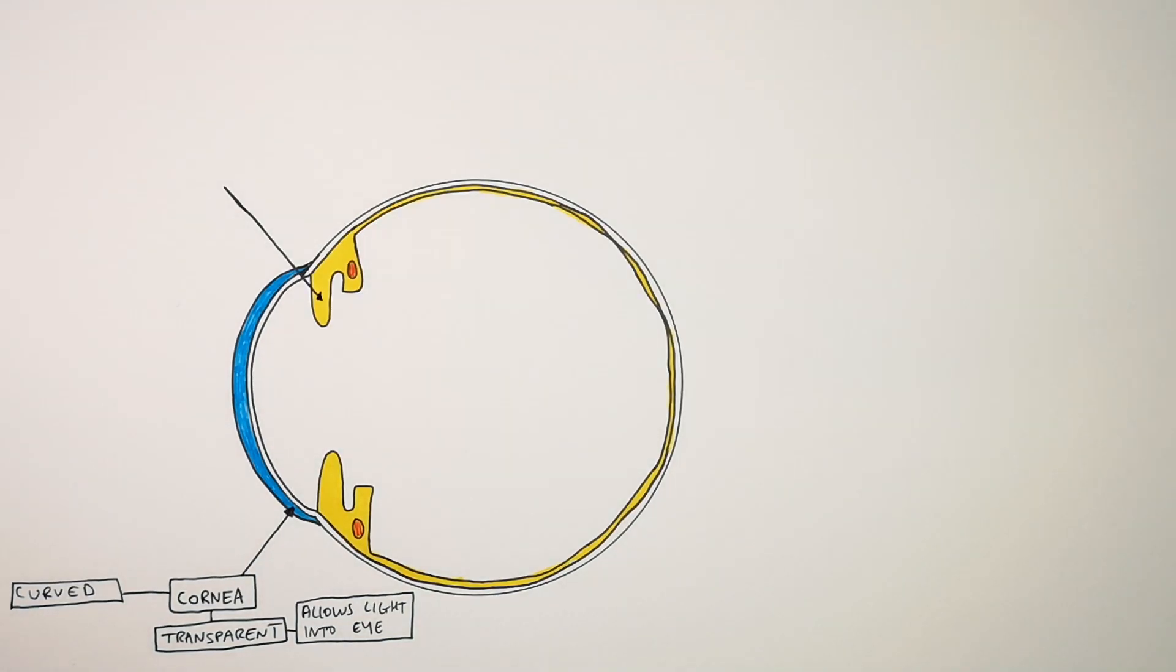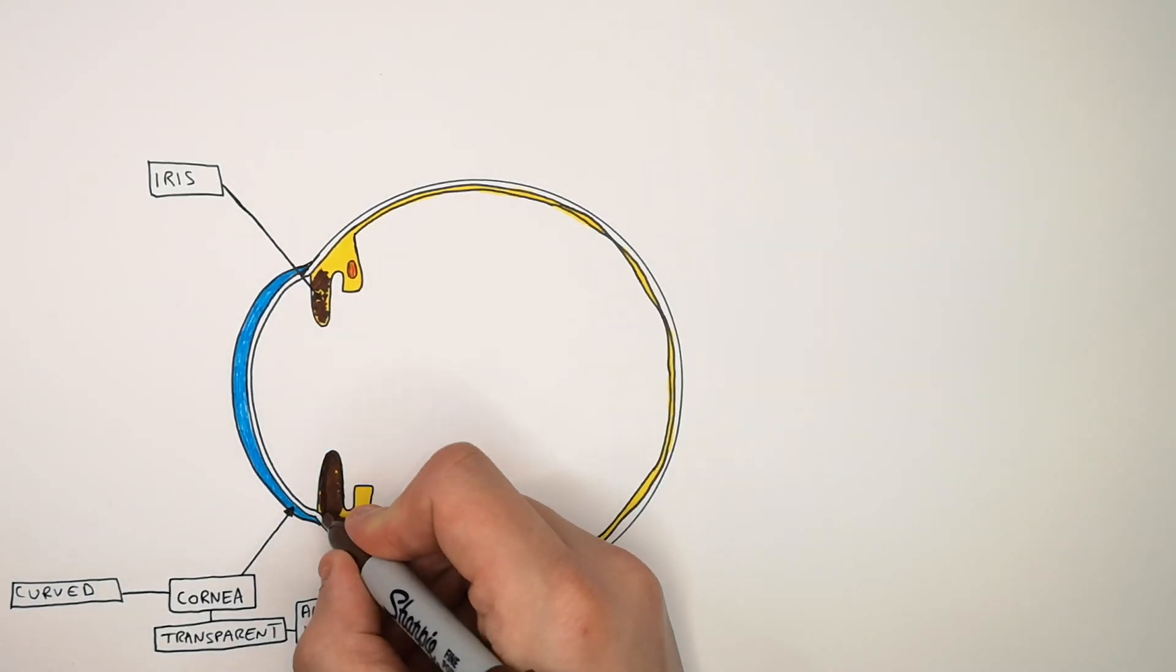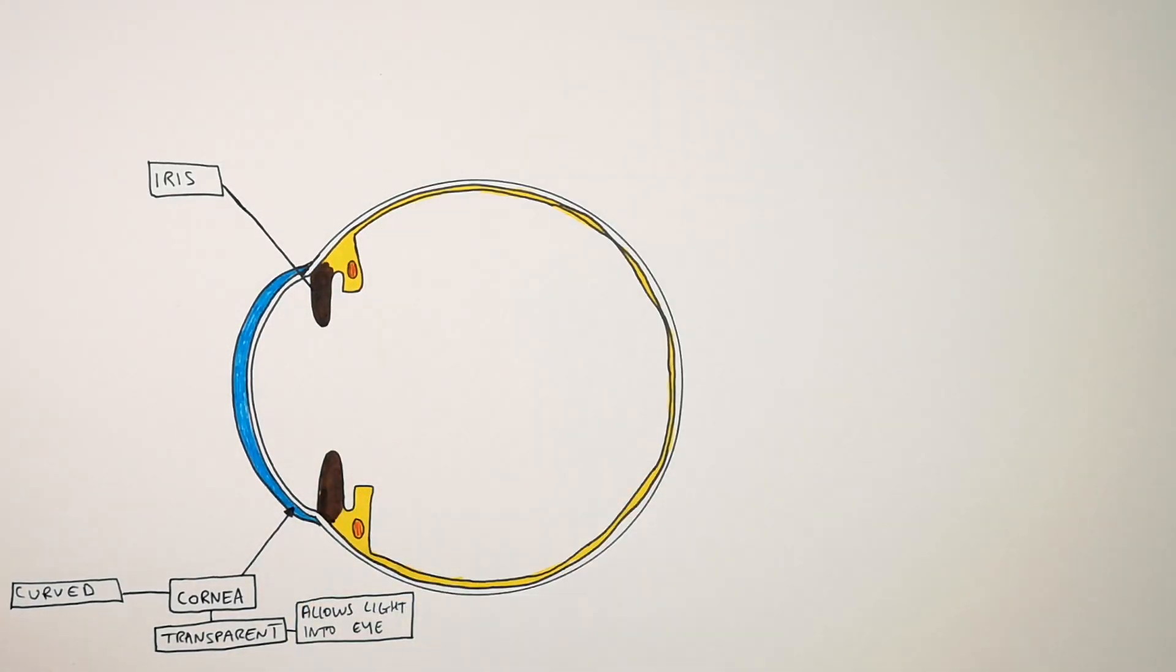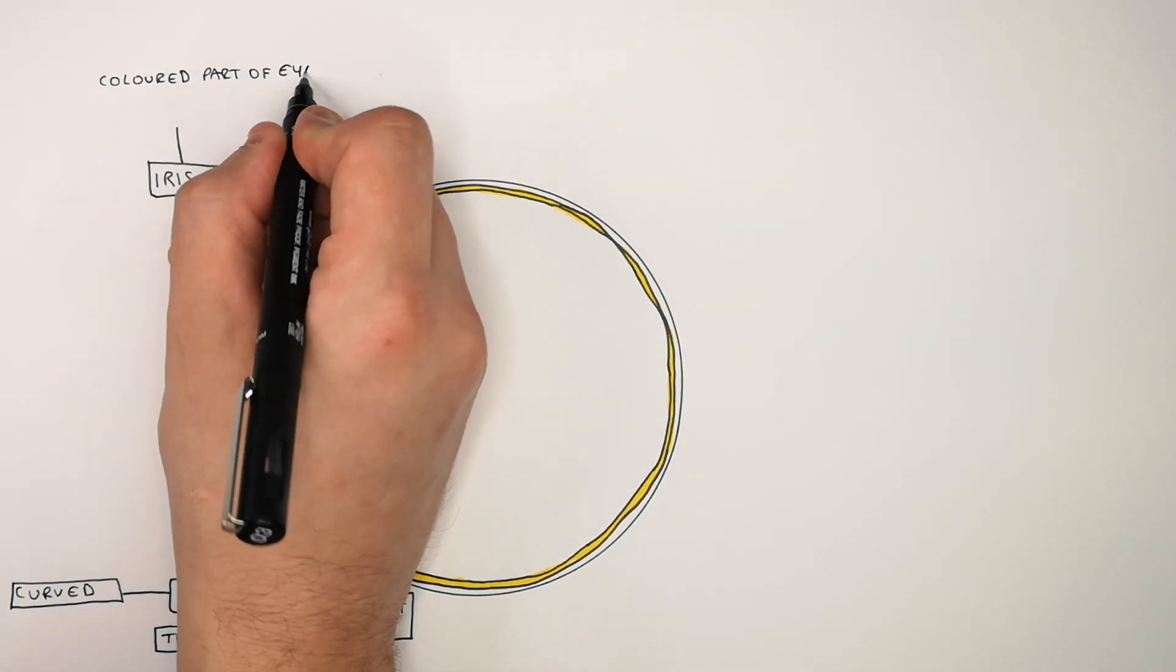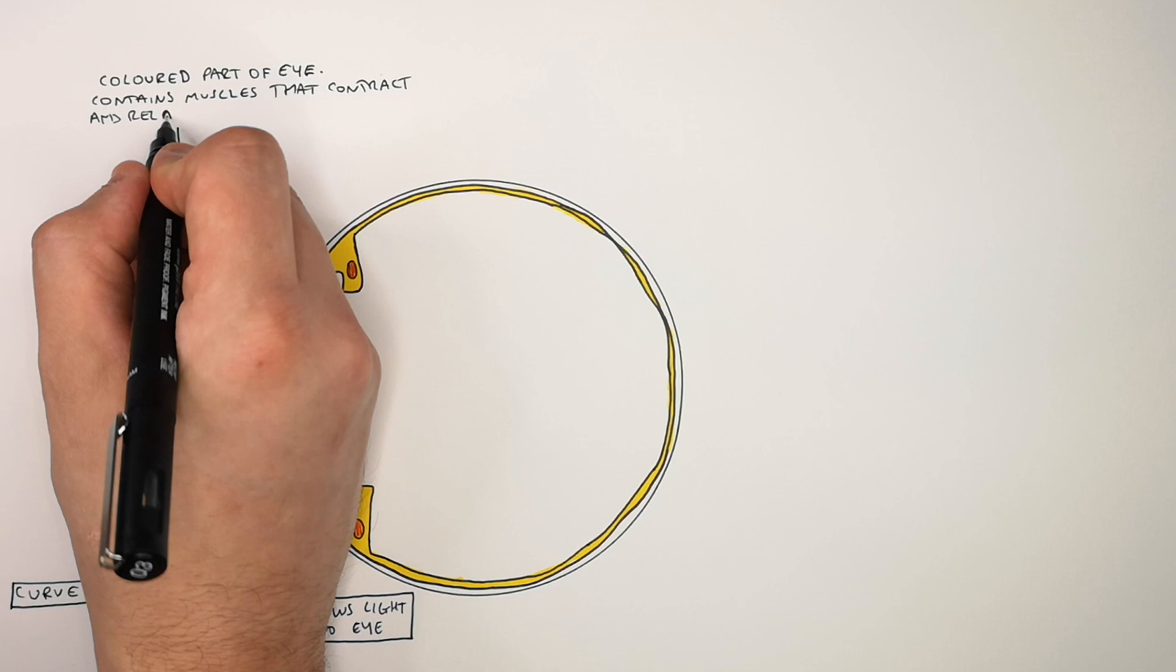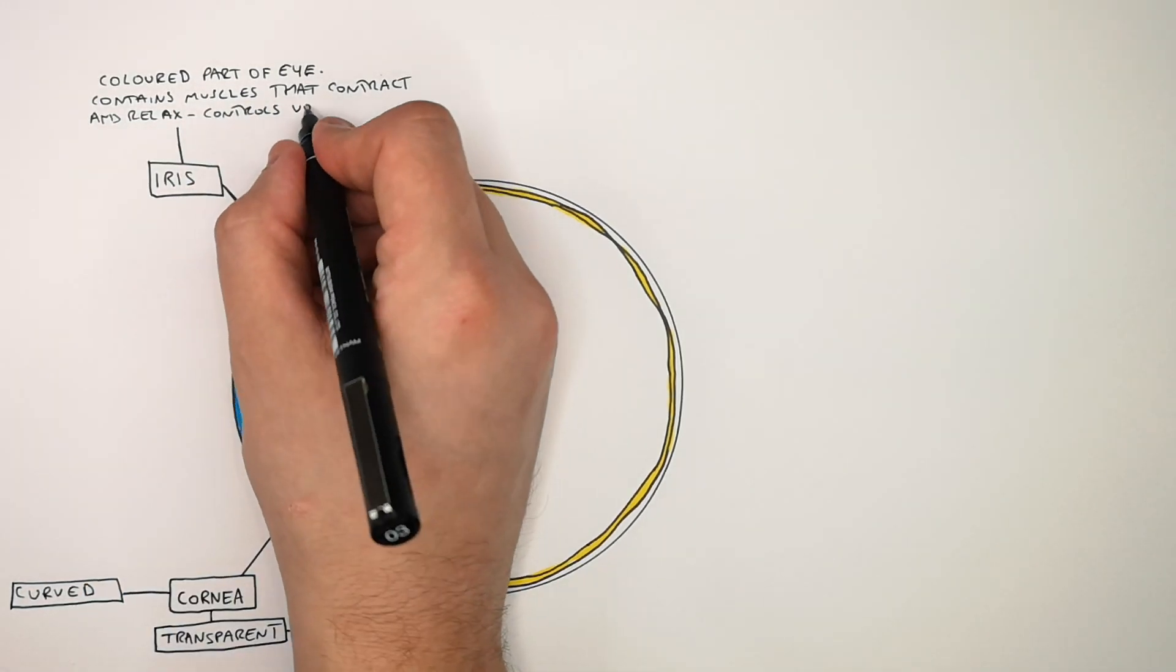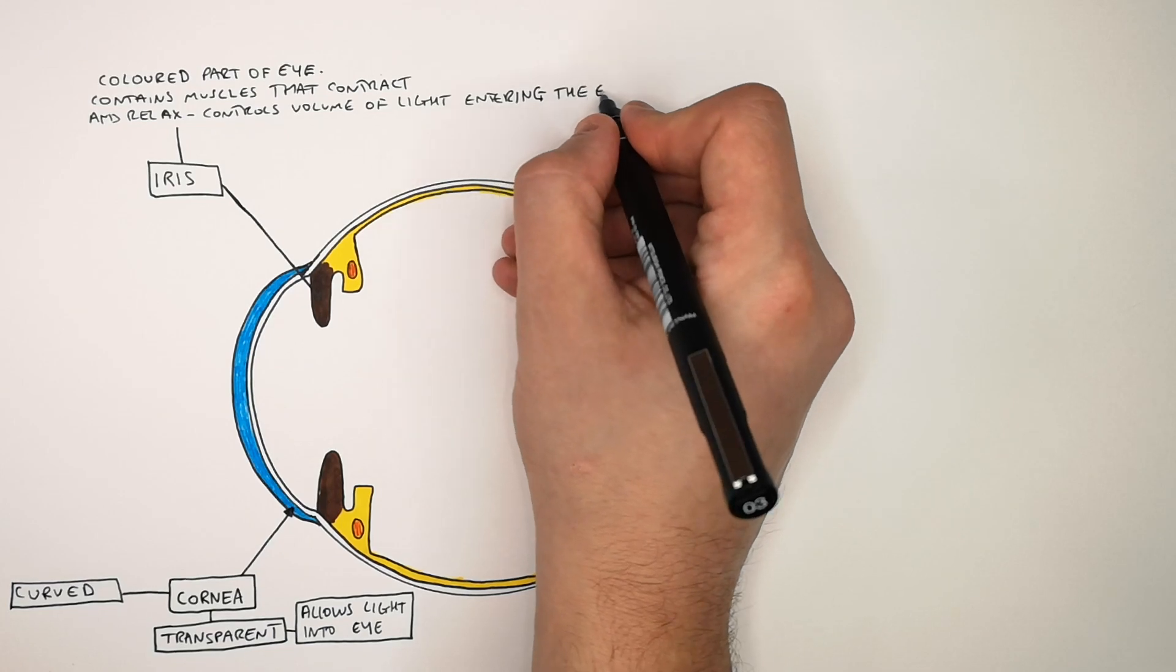This part of the eye is called the iris. Do not confuse the iris with the pupil. The iris is the colored part of the eye and it contains muscles that contract and relax. So the iris will open and close and it will control the volume of light entering the eye.